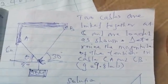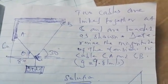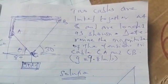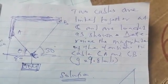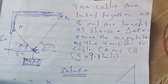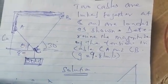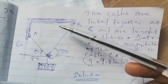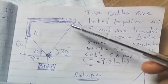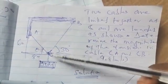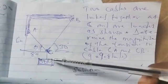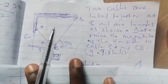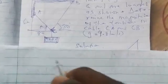Welcome to Engineers Mindset. We have a question which says two cables are linked at C and loaded as shown. We need to determine the magnitude of the tensions in cables CA and CB. We have cables linked at A and B from C, supporting a load of 50 kg.